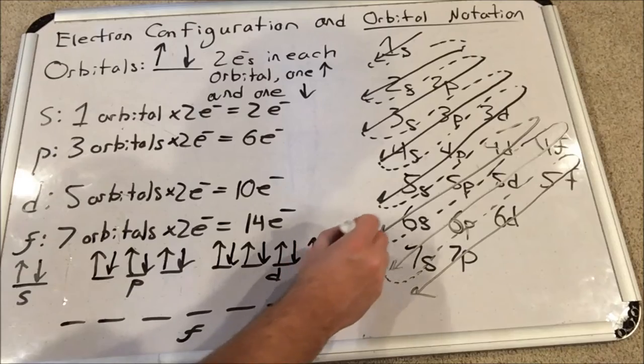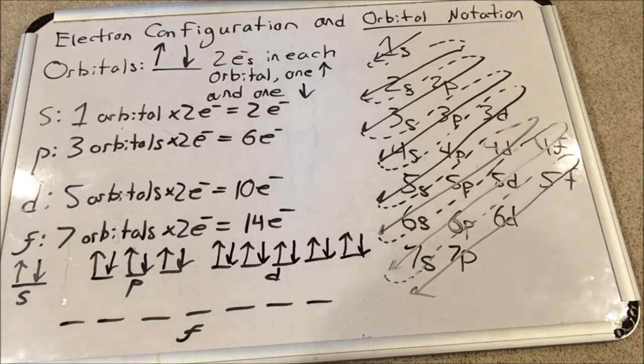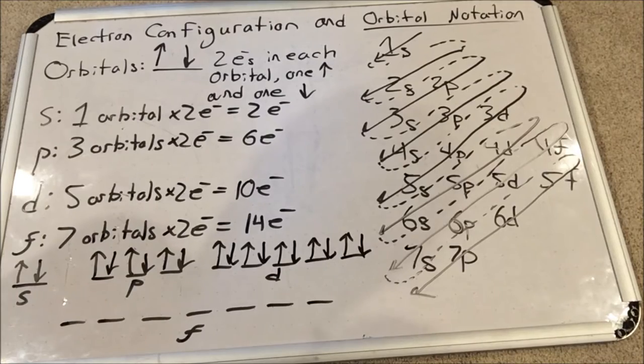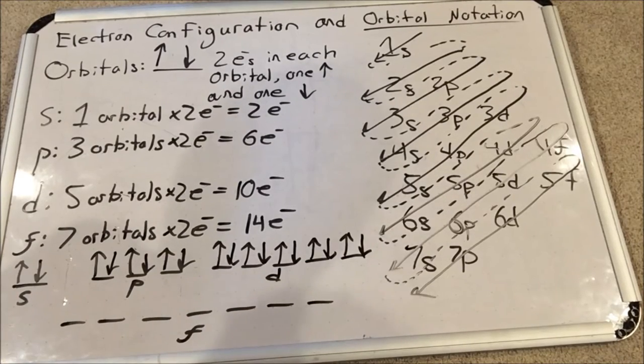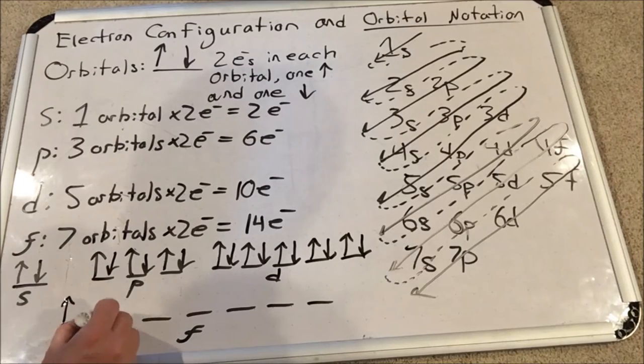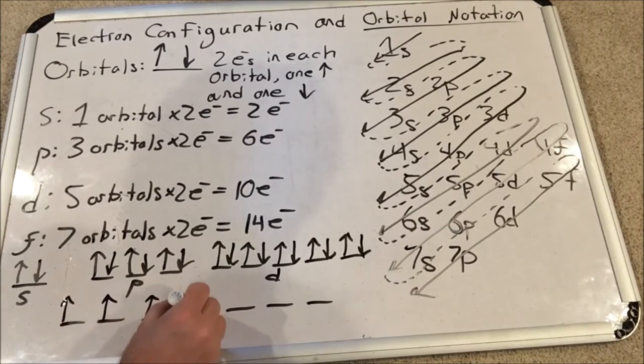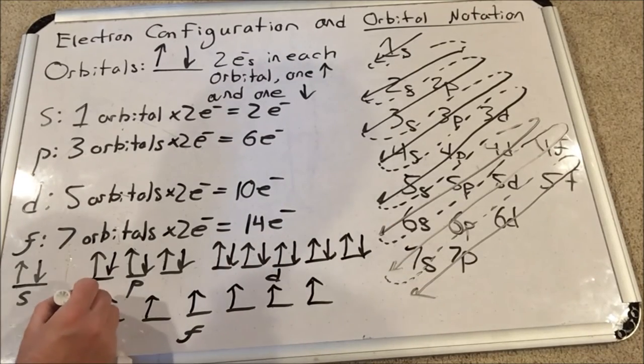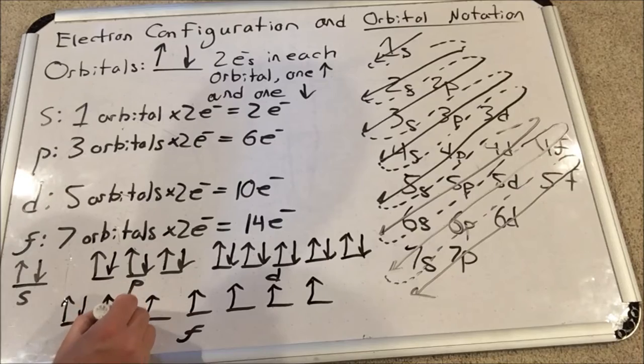Then we have the f sublevel, seven orbitals. We will do the exact same thing we did for p and d: all the spin up electrons fill first, and then we go back to the first orbital and we start filling the downward ones.